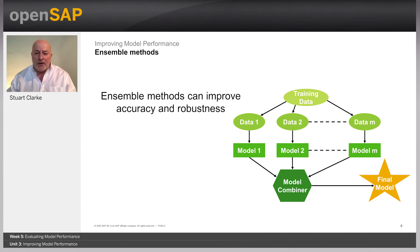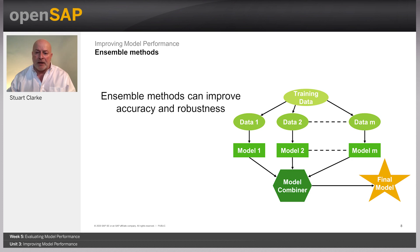Boosting involves incrementally building an ensemble by training each new model instance to emphasize the training instances that previous models incorrectly classified. In some cases, boosting has been shown to yield better accuracy than bagging, but it also tends to be much more likely to overfit the training data.